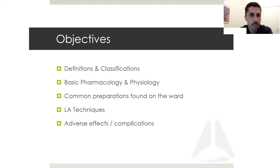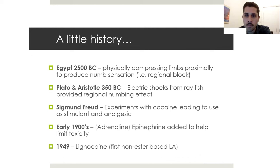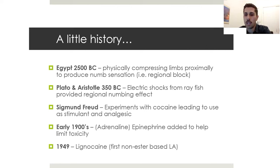Going into the history for interest's sake: around 2500 BC, they found that physically compressing limbs proximally produced a numbing sensation distally - essentially analogous to a regional block, giving rise to the notion of nerve conduction. Plato and Aristotle described using electric shocks from electric rays, finding it produced a local numbing effect to reduce pain from conditions like headaches and gout.